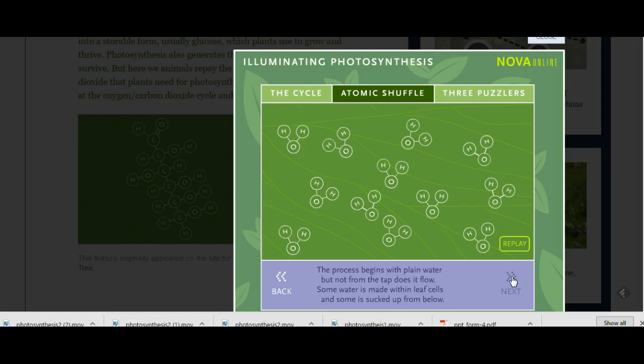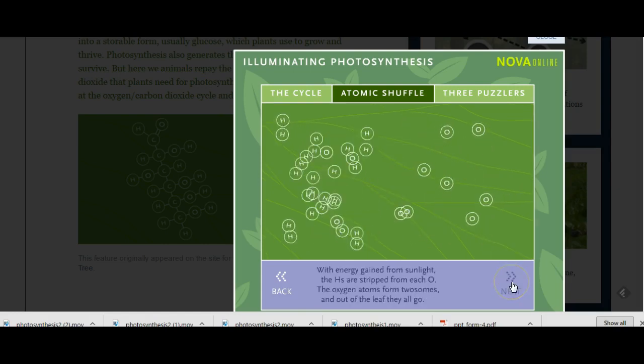And it uses the energy that it received from the sunlight to break apart the water. So you can see here are all these water molecules, H2O, two hydrogens and an oxygen. And so it uses the energy that was stored in the chloroplasts from the sunlight, and it breaks these bonds in the water, breaks them apart.